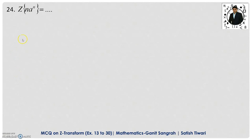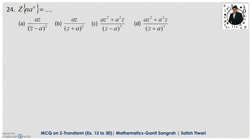Example 24: Z-transform of n·aⁿ. The Z-transform of n is z/(z−1)². Apply the damping rule by replacing z with z/a. Substitute and simplify to get the answer.